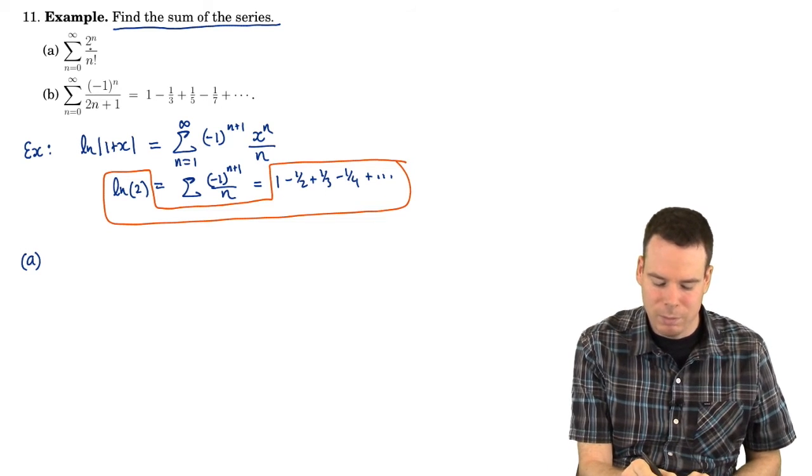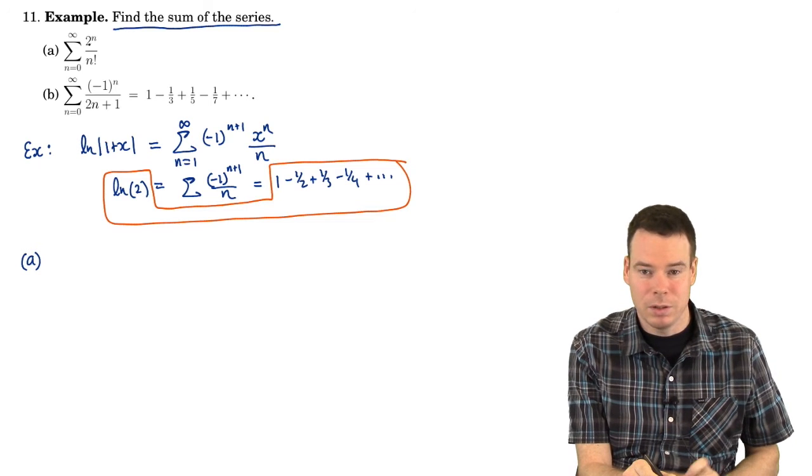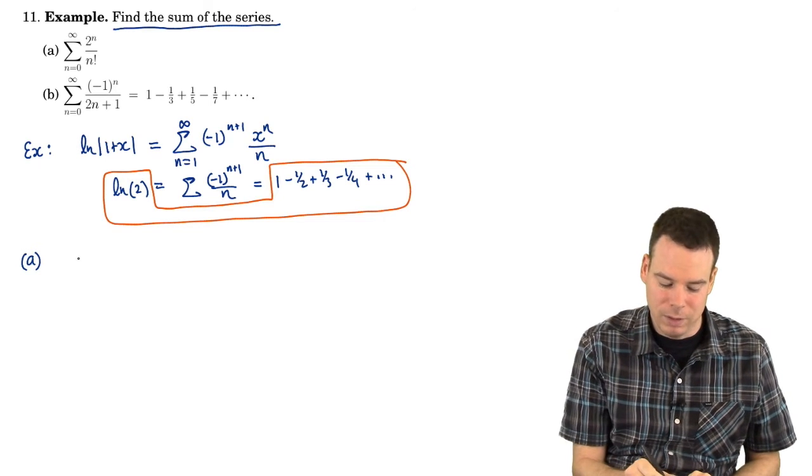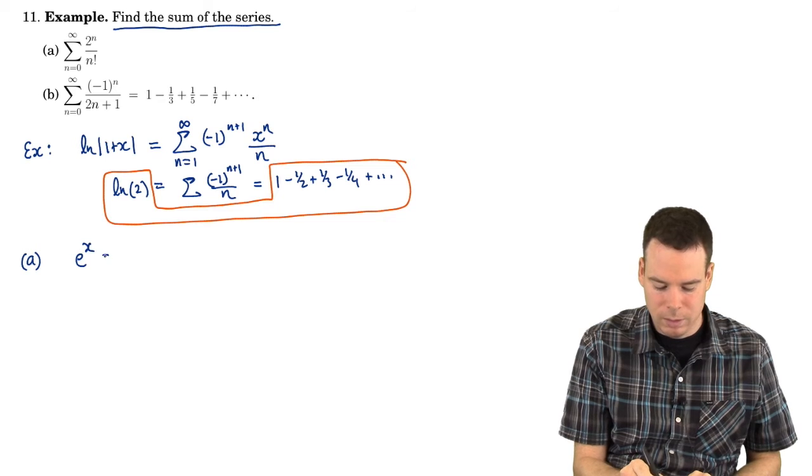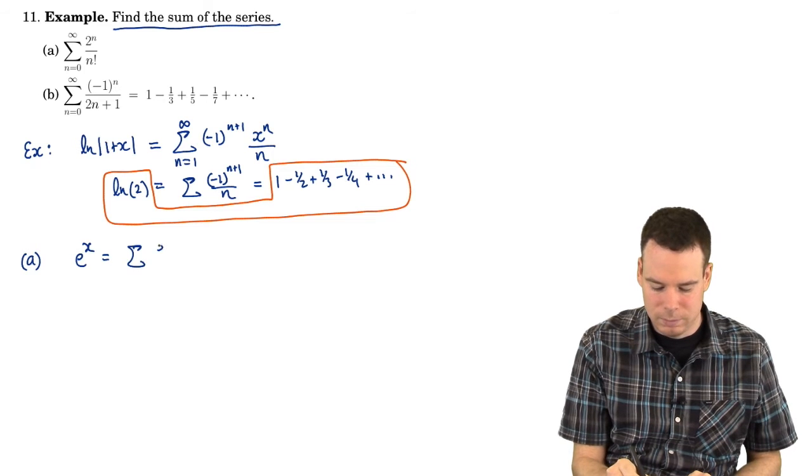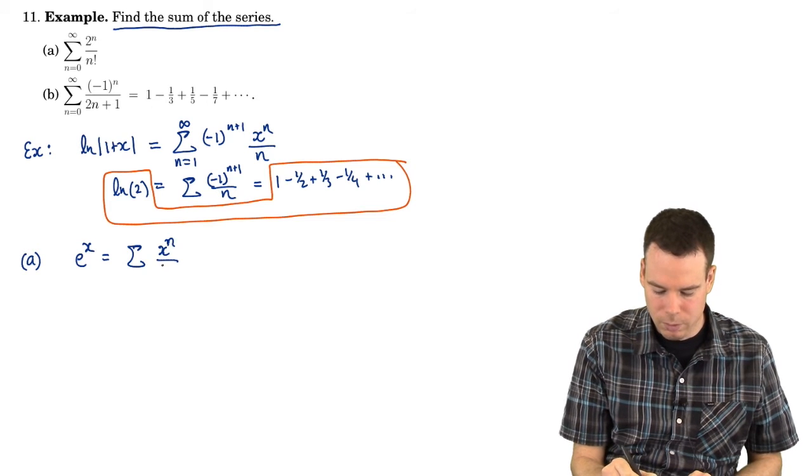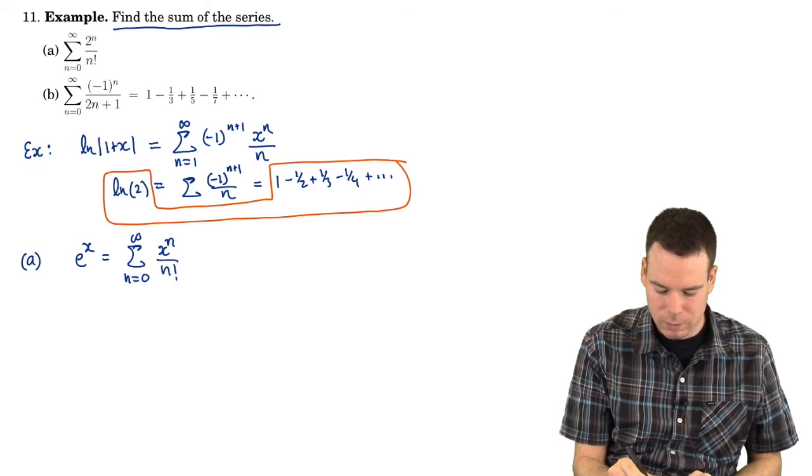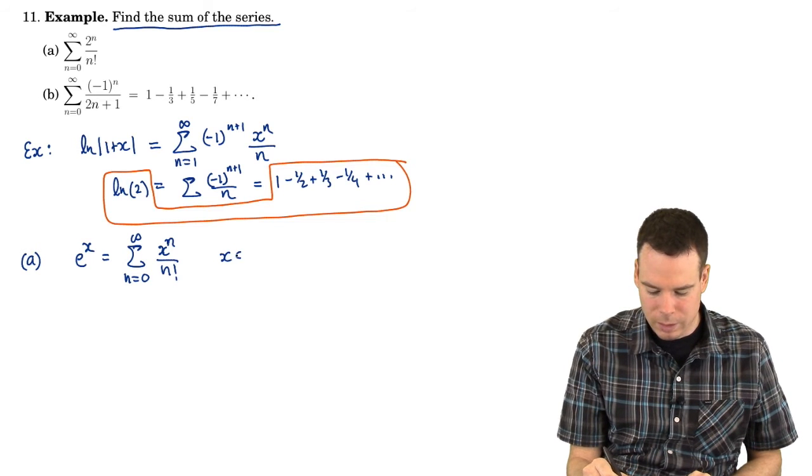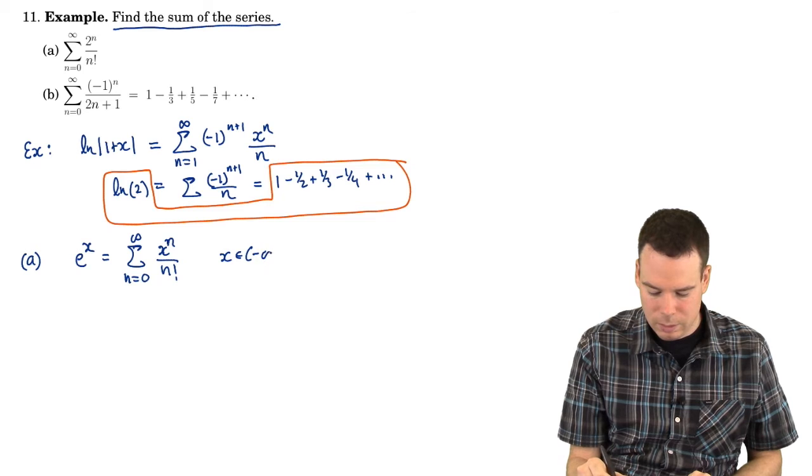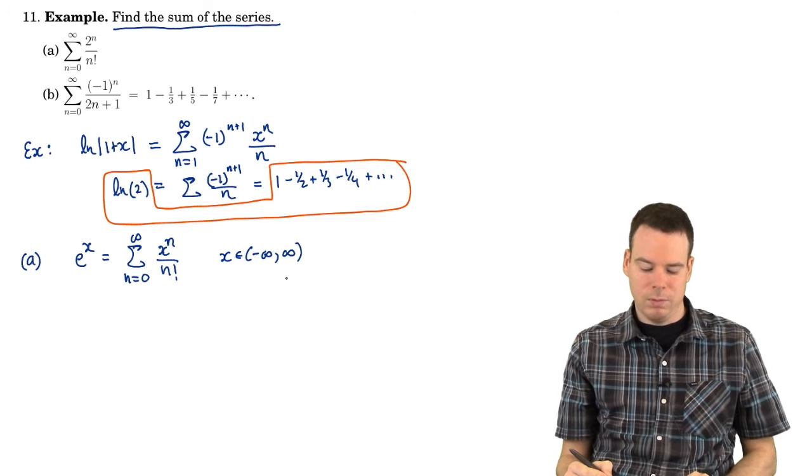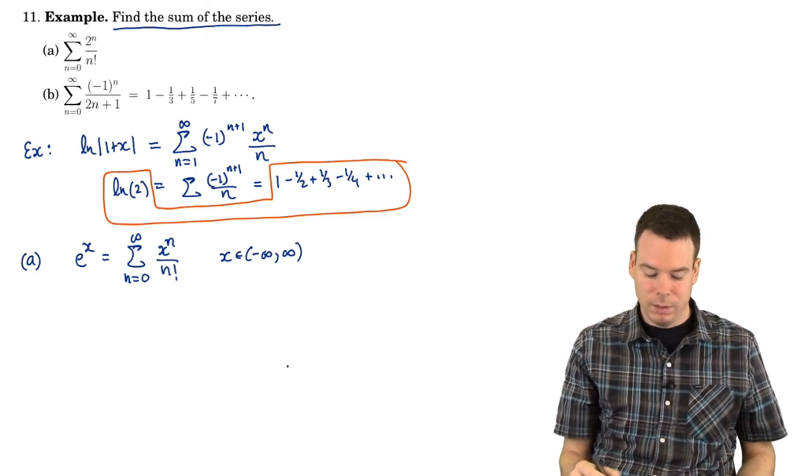Well, the 2 to the n over n factorial, if I imagine that not being a 2 there but I imagine it being an x, x to the n over n factorial. Oh, I know that one. That's e to the x. Well, e to the x is x to the n over n factorial, n goes from 0 to infinity. And that's when x is any number between negative infinity to infinity. So any real number, I get equality here.